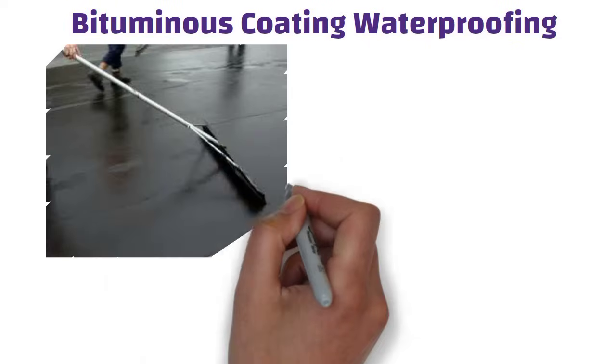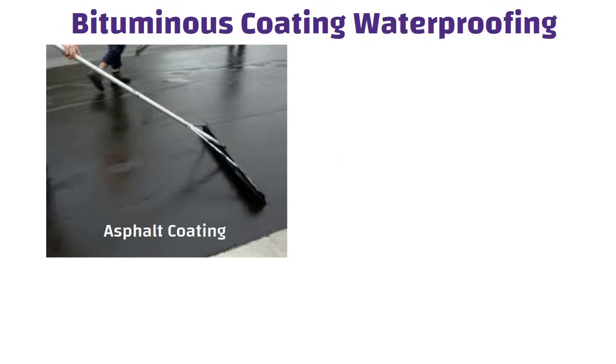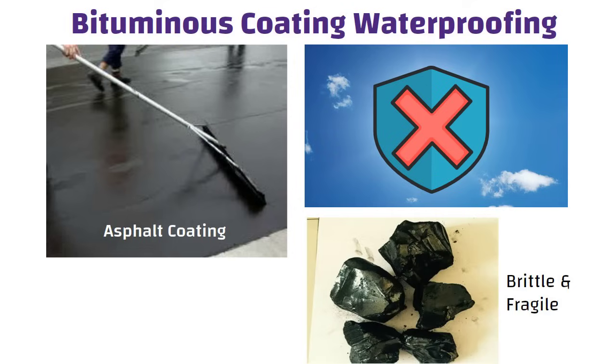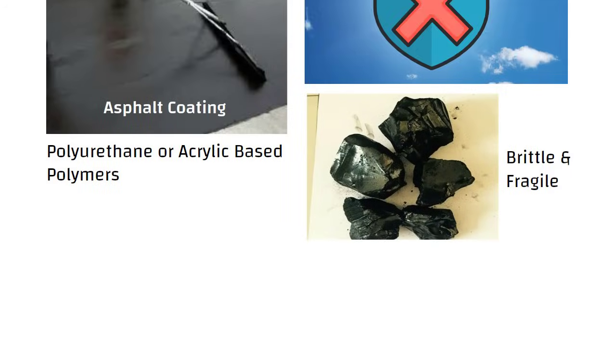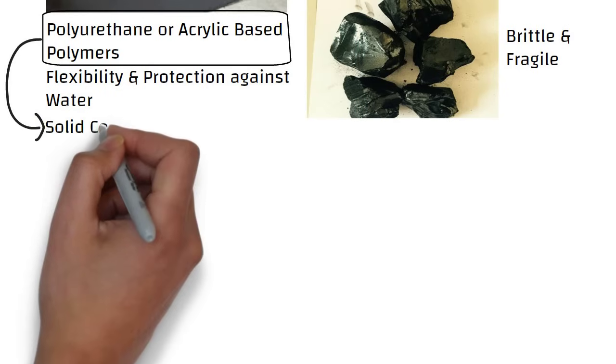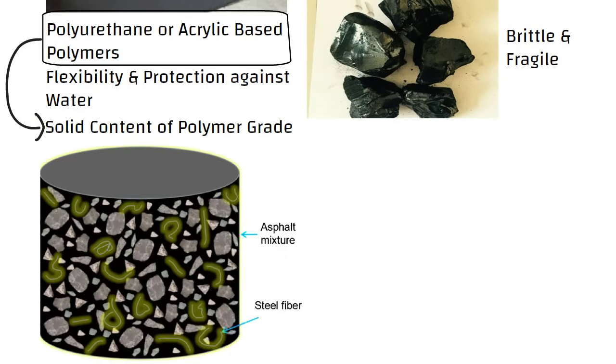It is also called as asphalt coating. Bituminous coating is not suitable for exposure to sunlight. It becomes very brittle and fragile when long exposure to sunlight, unless it is modified using a more flexible material like polyurethane or acrylic based polymers. Its flexibility and protection against water depends on solid content of the polymer grade as well as reinforcement of the fiber added to the bitumen.